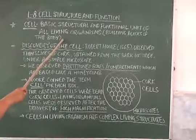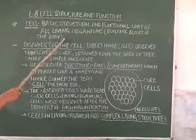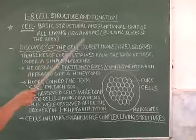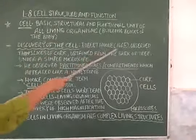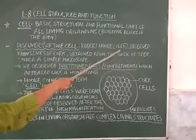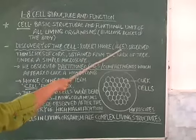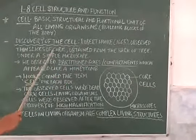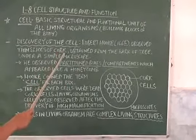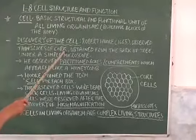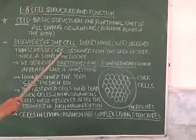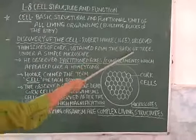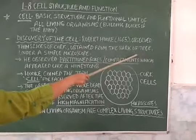Now let us see how the cells were discovered. Robert Hooke in 1665 observed thin slices of cork. Cork is a plant tissue. It is a dead plant tissue obtained from the bark of a tree.